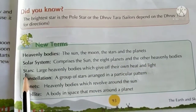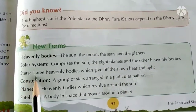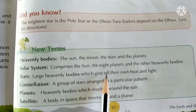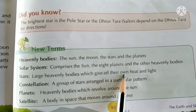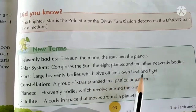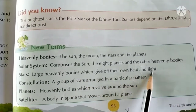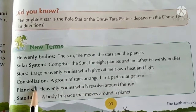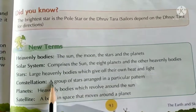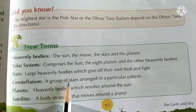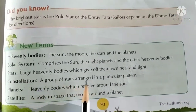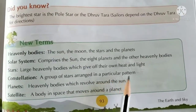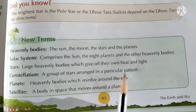Stars are large heavenly bodies which give off their own heat and light. A constellation is a group of stars arranged in a particular pattern.